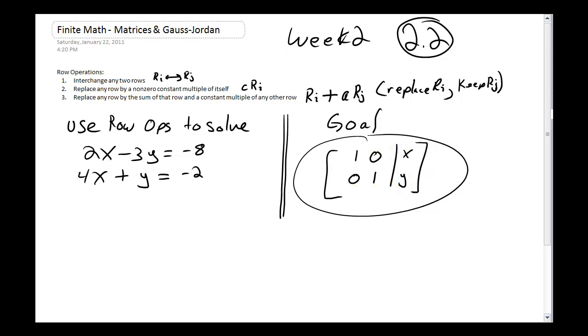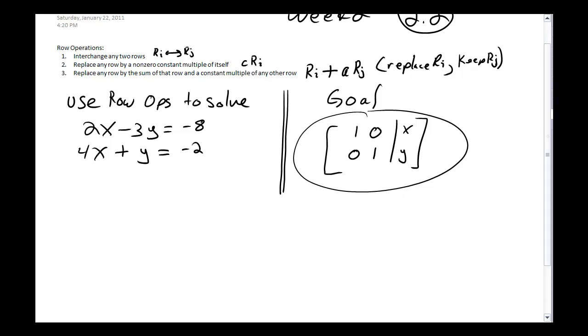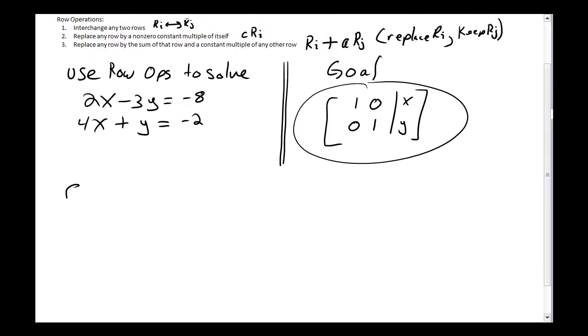So let's take an example of this and deal with it. We're going to use row operations to solve 2X minus 3Y equals negative 8 and 4X plus Y equals negative 2. The first thing to do is to put it into an augmented matrix. My augmented matrix is going to look like 2, negative 3, negative 8, coming from 2, negative 3, and negative 8. On my second row, I'm going to have 4, 1, negative 2, again coming from 4, 1, and negative 2. It's not a 0 there. I'm just talking about the number in front of Y, which is understood to be 1.